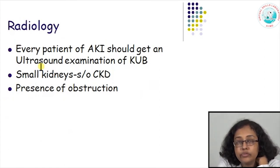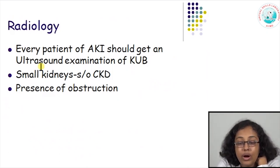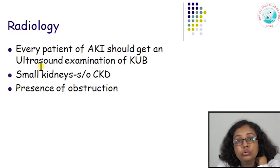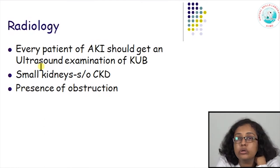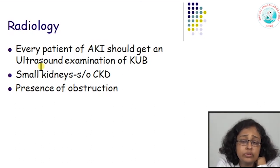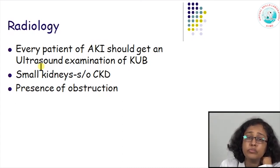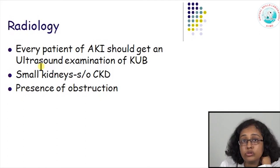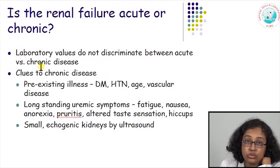Every patient with acute renal failure should have an ultrasound examination of the kidneys, ureters, and bladder. If the ultrasound shows small shrunken kidneys, you know the patient has chronic kidney damage — so the AKI could be a superimposed insult on chronic kidney disease. It also shows the presence of obstruction — if the patient has hydronephrosis on ultrasound, that suggests obstruction somewhere below the kidneys — and other causes like stones, infective foci, or malignancies.